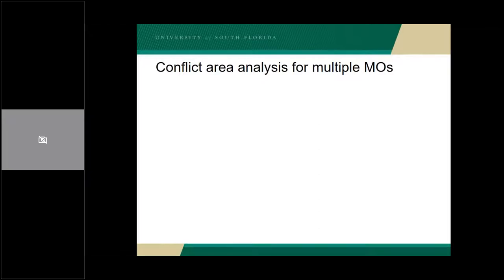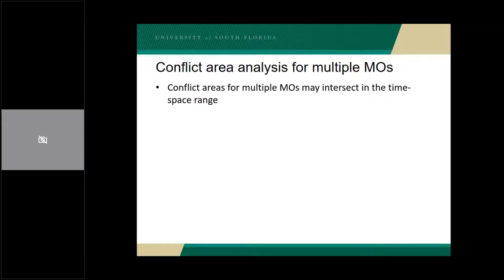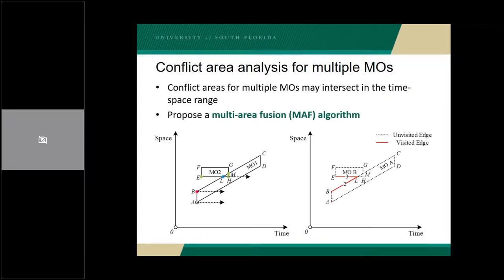We introduced the conflict area analysis for only one MO in the environment. However, in a real traffic environment, there are more than one MO. Thus, the conflict area for multiple MOs needs to be studied. The conflict area of multiple MOs may not simply be the summation of each single MO's conflict area, because the conflict areas of individual MOs may intersect with each other and form a larger irregular area in the time-space range. Here we propose a multi-area fusion algorithm to fuse the intersected conflict areas into one larger area.